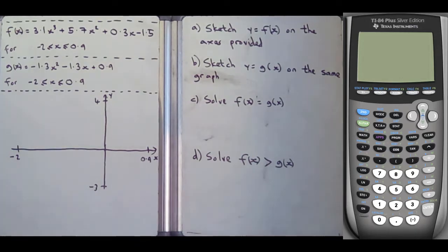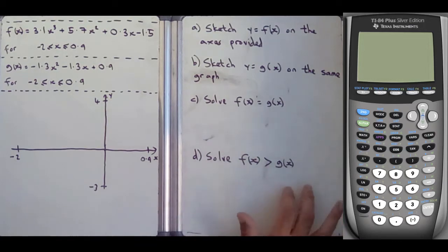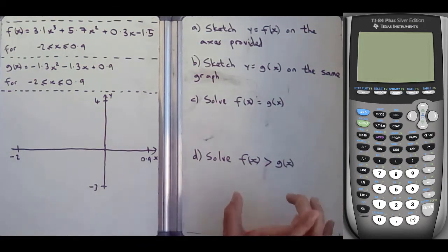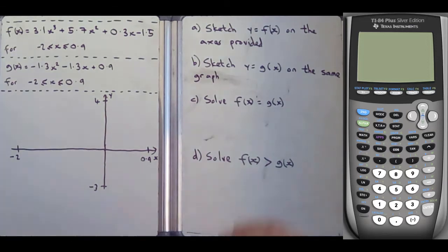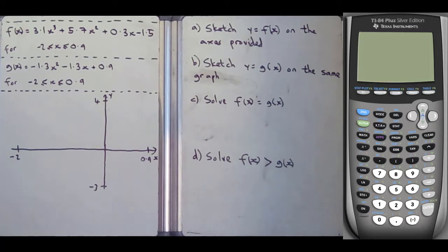Part c, solve f of x equals g of x — that's intersections. Part d, solve f of x is greater than g of x, which is something I haven't covered before in a different video. So I'm going to go through step by step. Parts a, b, and c should hopefully be quite simple, and then we'll see what happens afterwards. We're doing all this on the TI-84, so we go to the calculator.